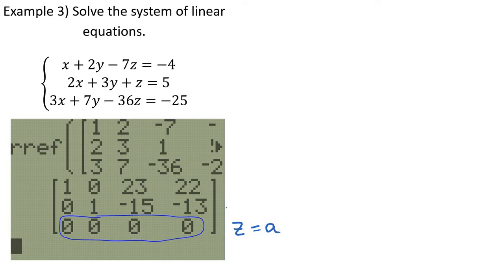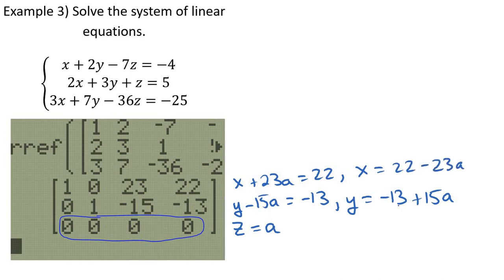Up here, I'm going to write these other variables in terms of z. And so what does this mean? This means y minus 15z, or I could put an a here, substitute, equals negative 13. So then if I solve for y, y would equal negative 13 plus 15a. I could just add that over. Let's do the same thing up here. So x plus 23z, but I'm just saying z could be a, any number, equals 22. Let's solve for x. So x equals 22 minus 23a.